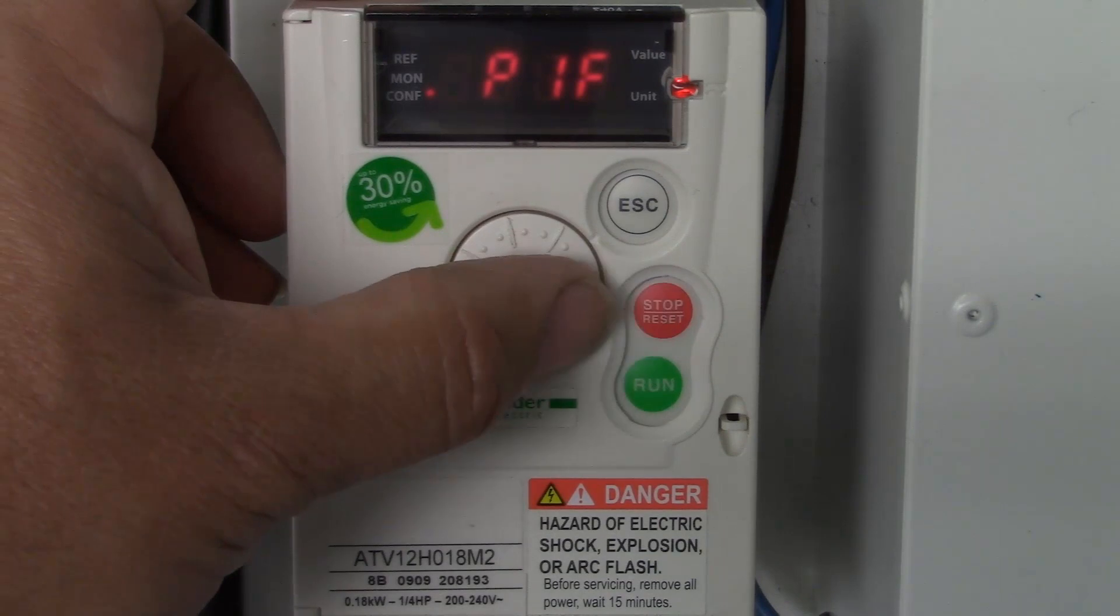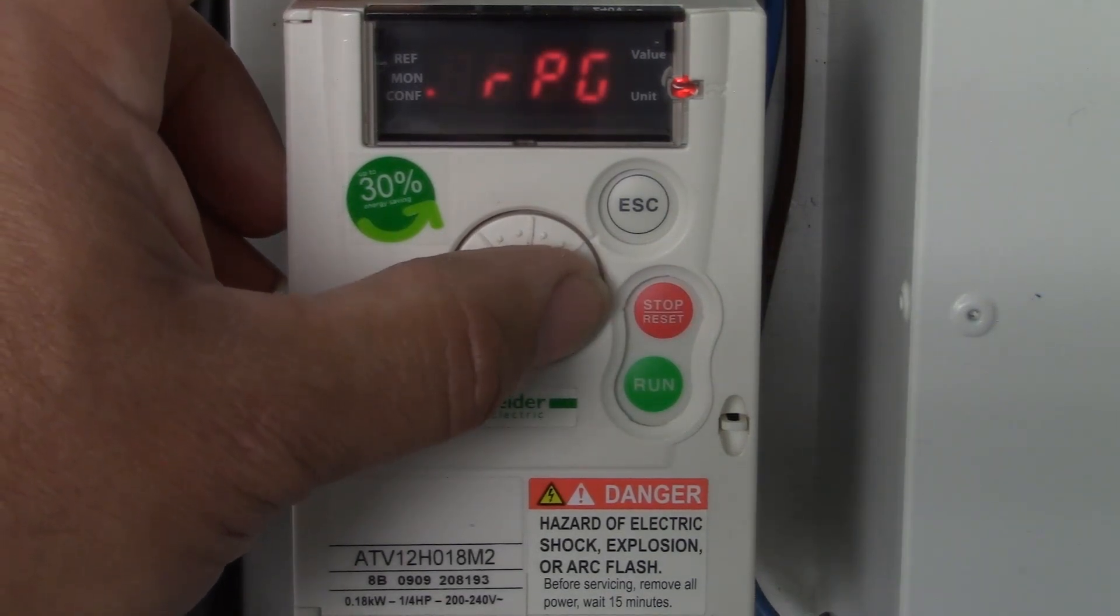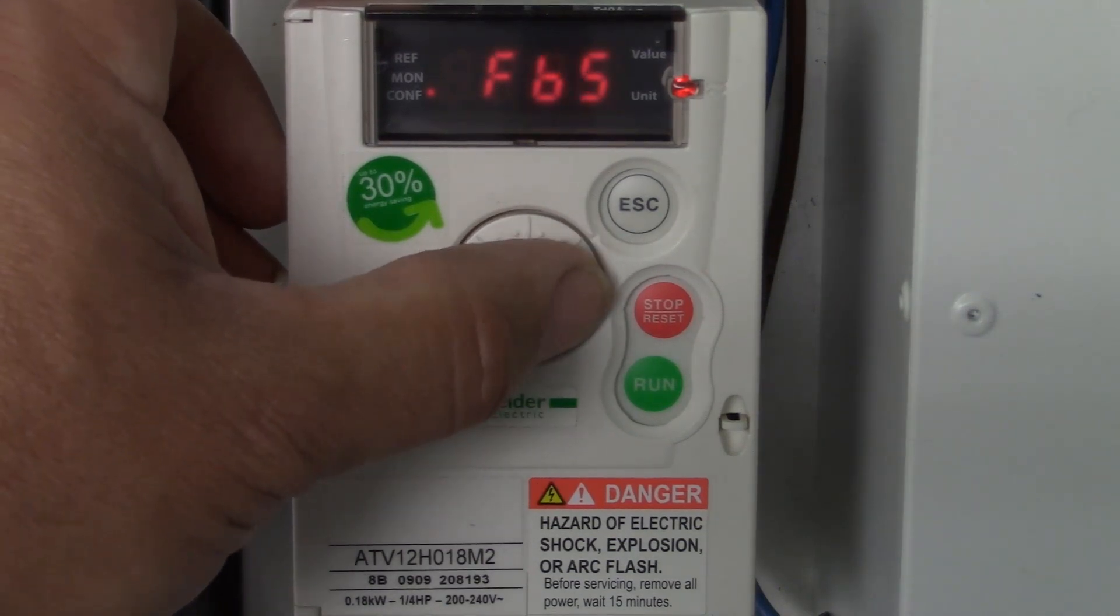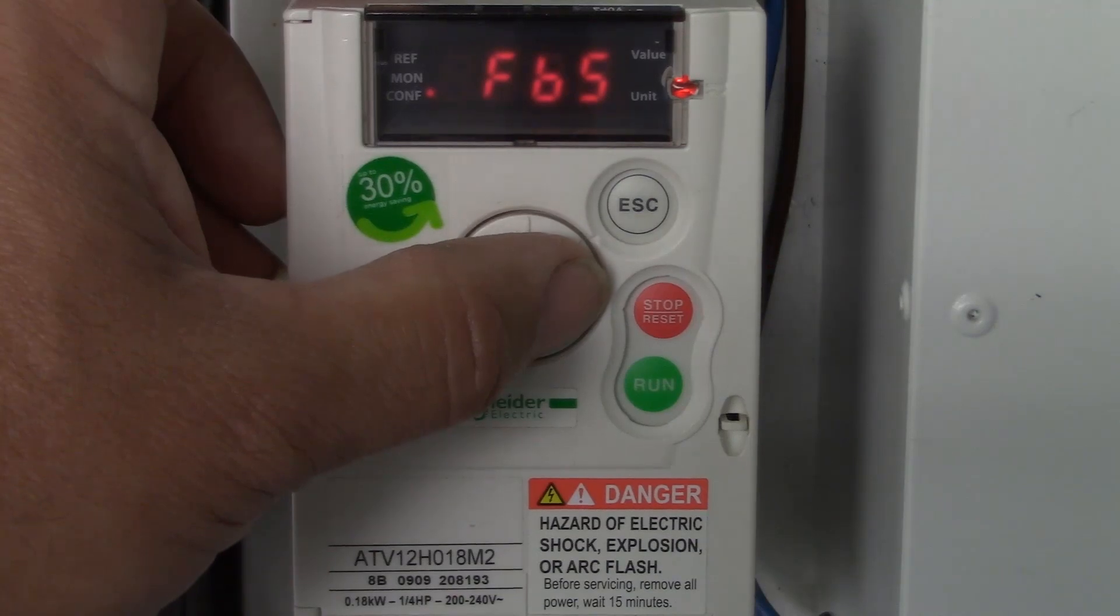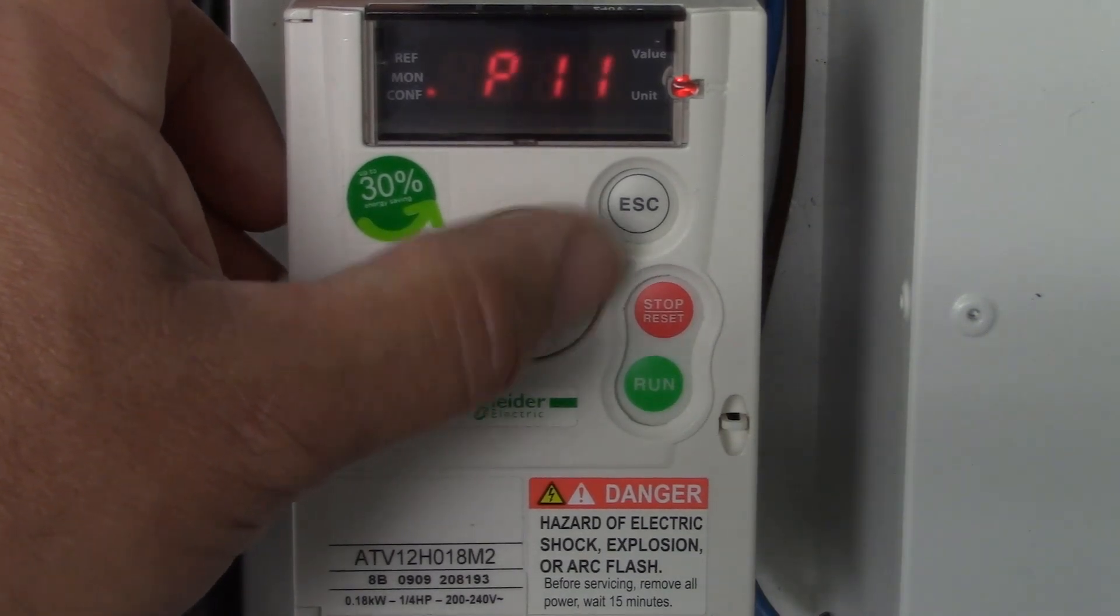Just below the PIF parameter we have the RPG, RIG and RDG and FBS. These are your gains inside the drive. Do not adjust these. Leave these at default settings until you have carried out your first system tests.